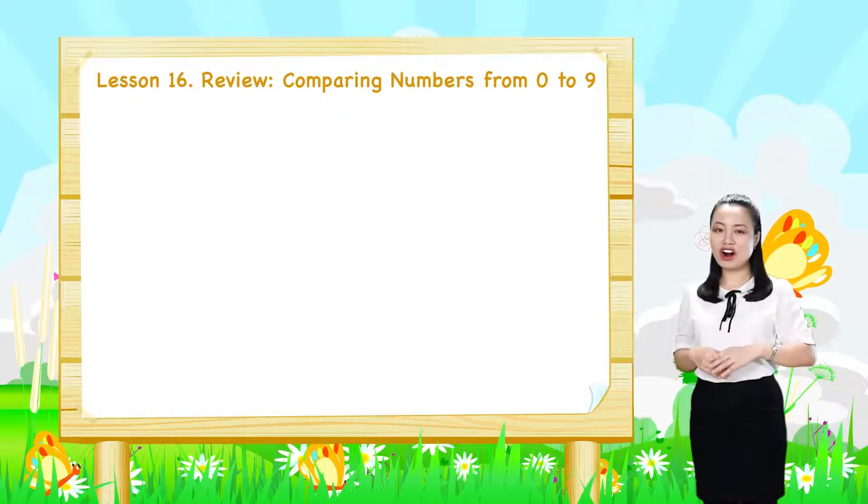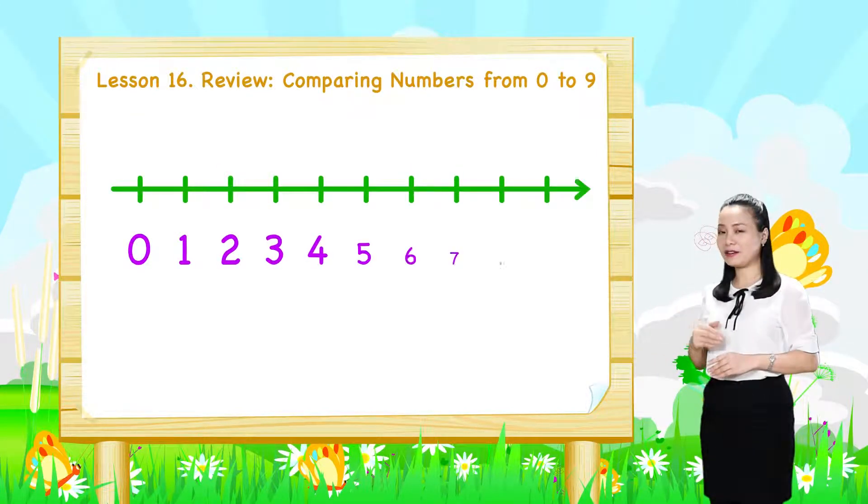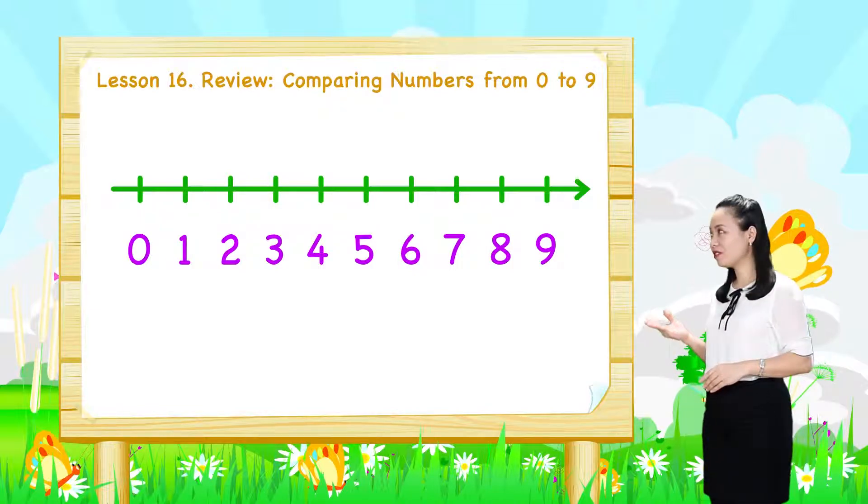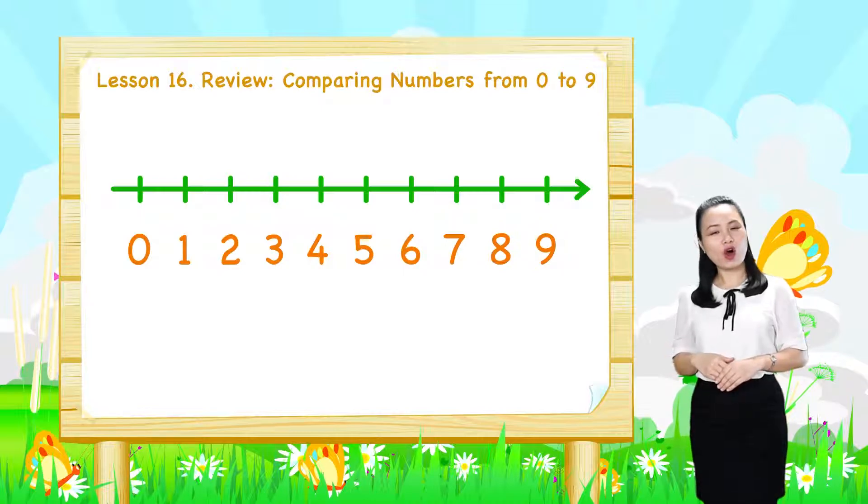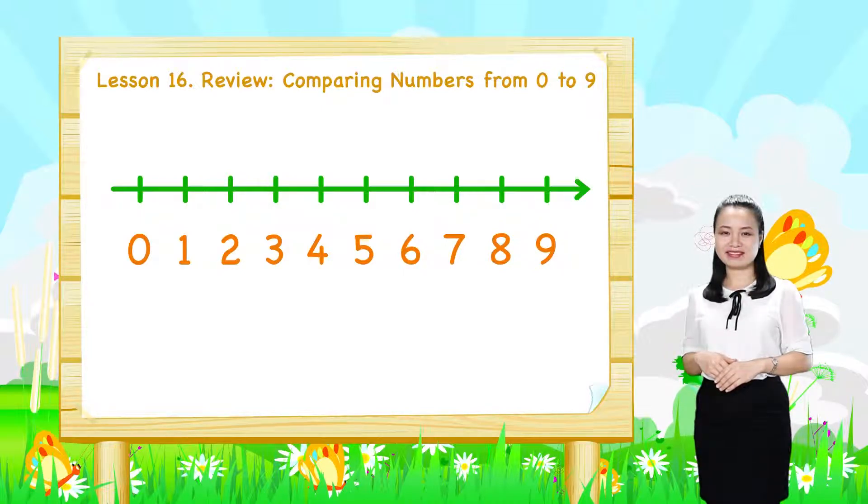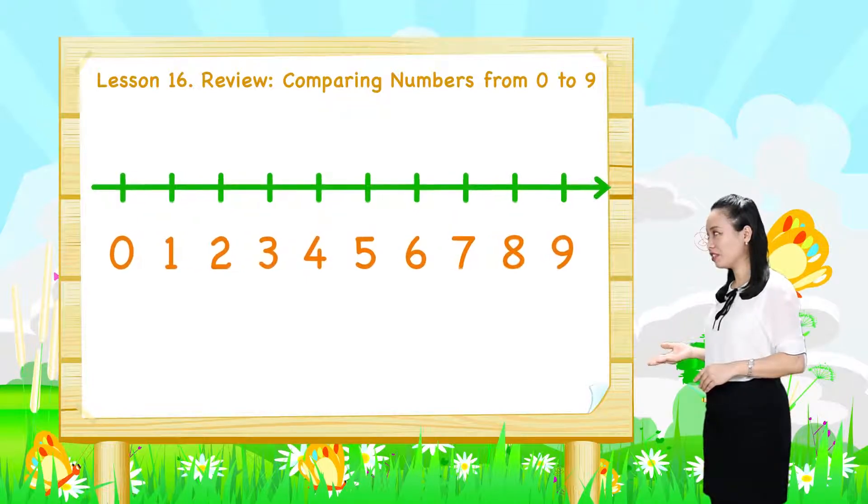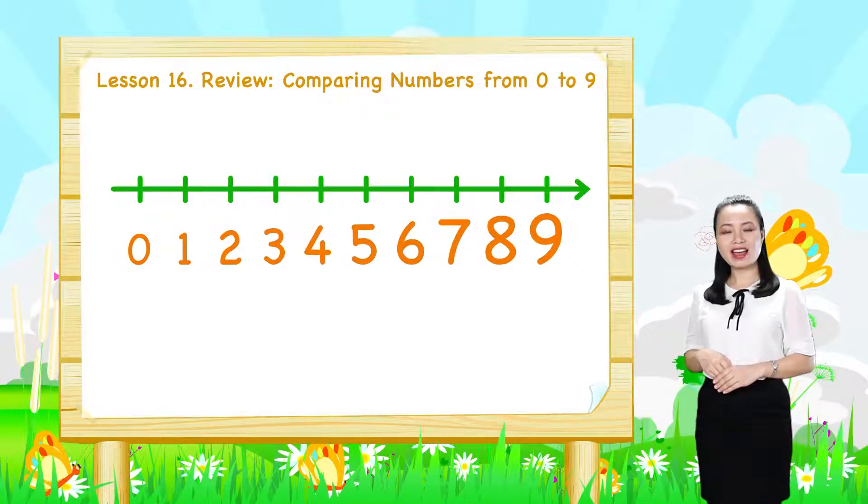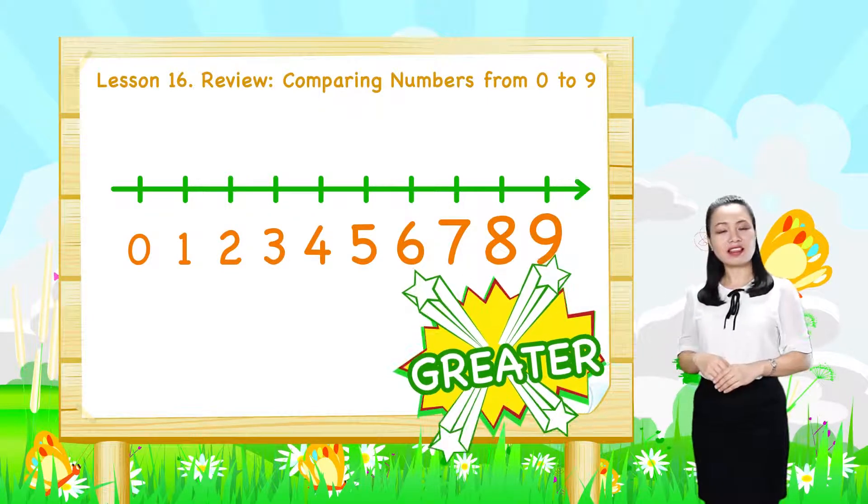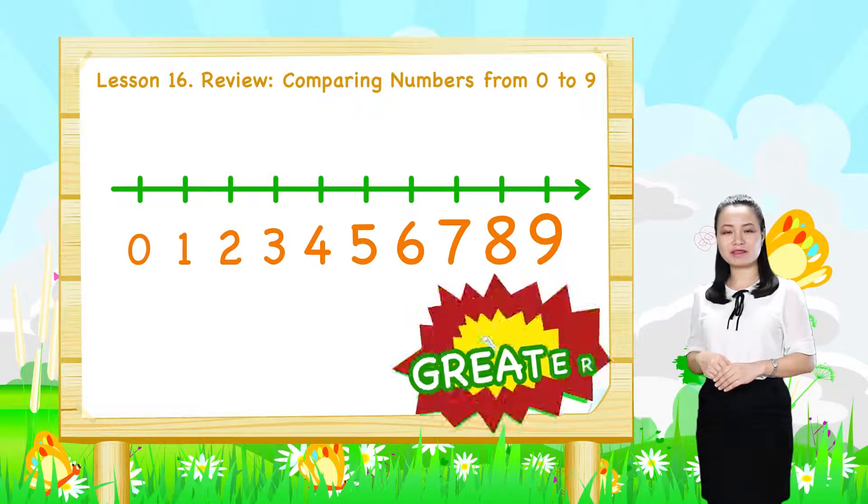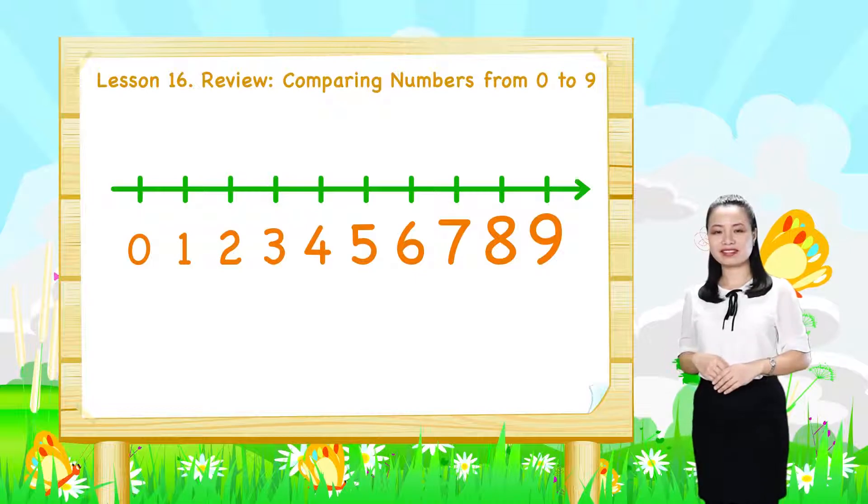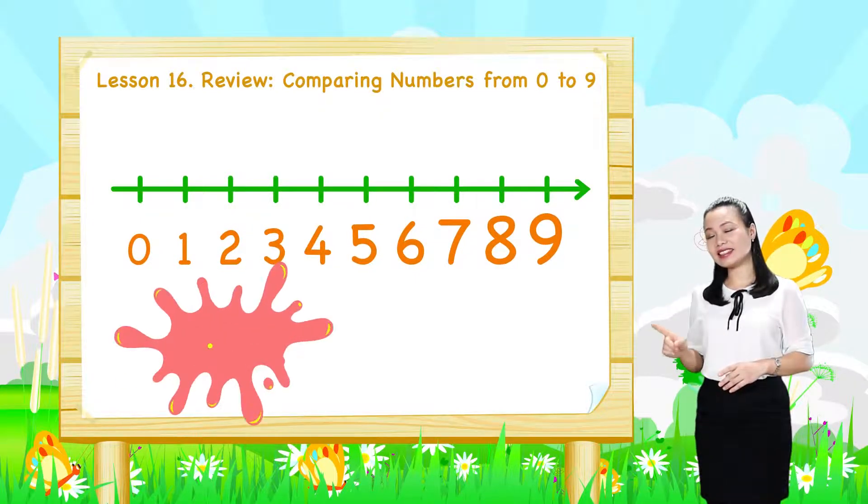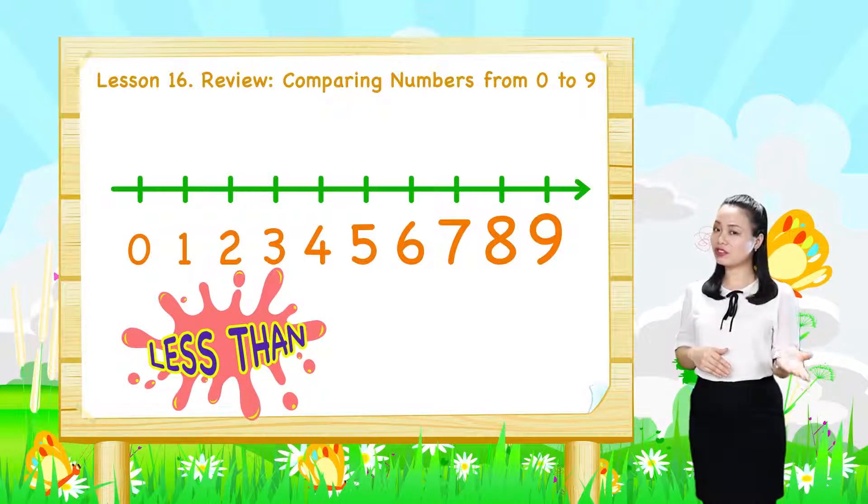Let's recall the number line. We place numbers from 0 to 9 on the number line. Remember that on the number line, a number to the right is greater than a number to the left, and a number to the left is less than a number to the right.